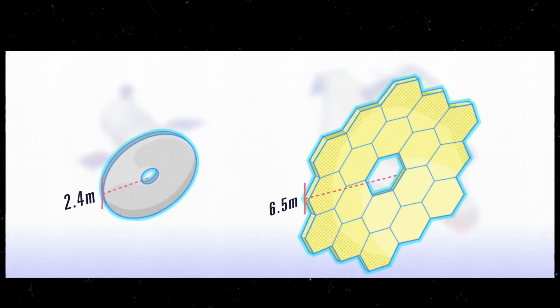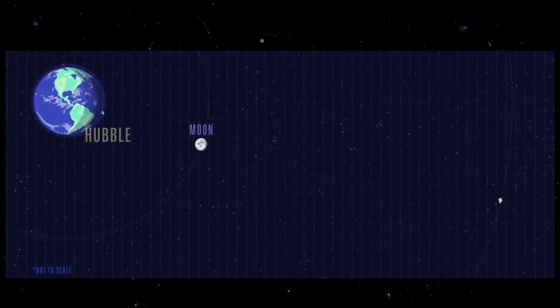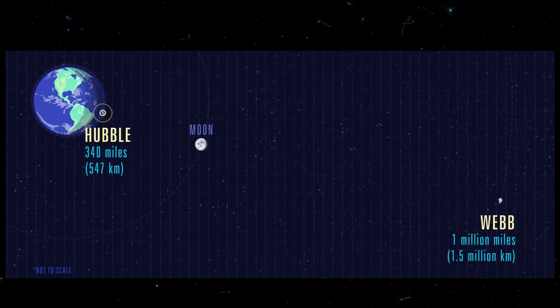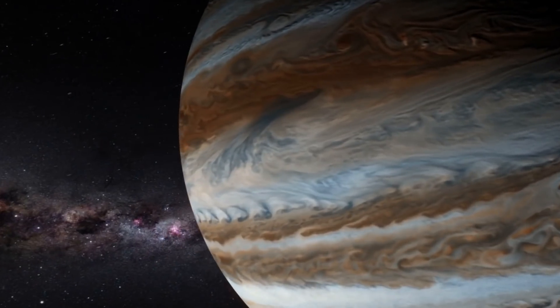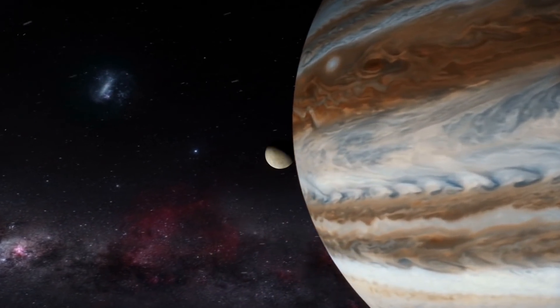James Webb is going to be the largest telescope ever sent into space, meaning that it will be capable of achieving more vivid and superior resolution as it will be able to gather more light than its predecessor before it.